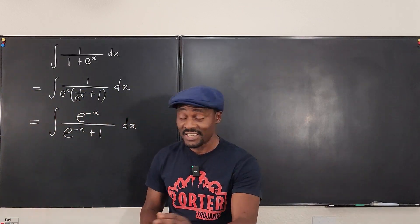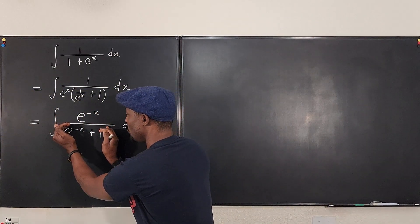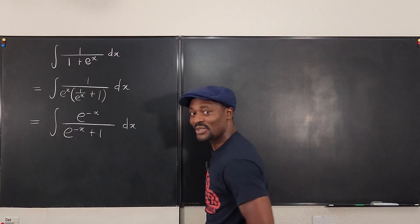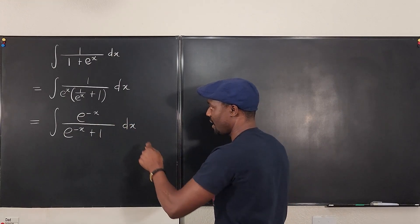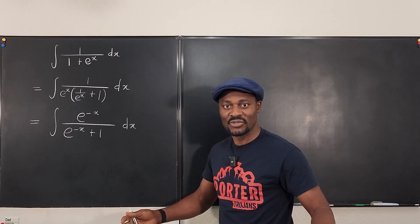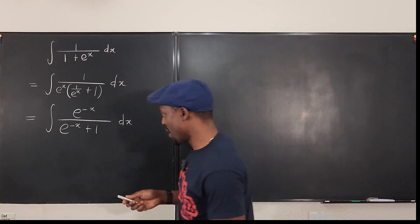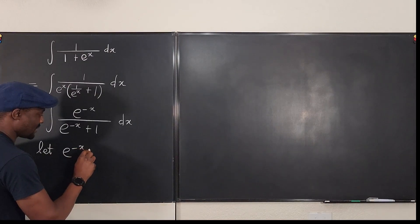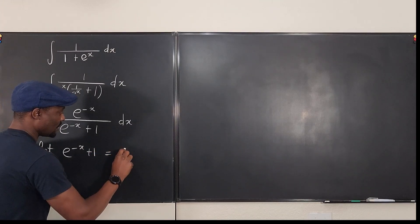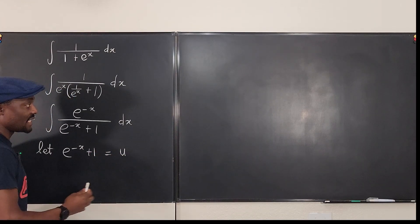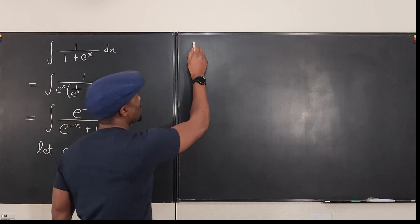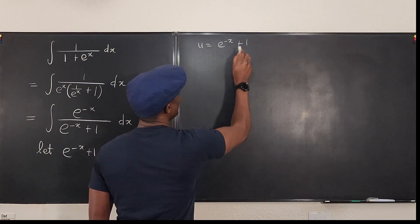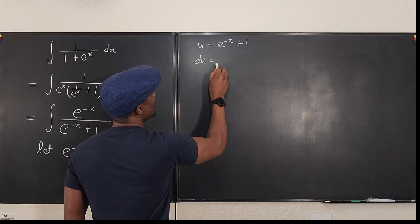Because now I am guaranteed that if I make this my u, when I take the derivative of this, e to the minus x will still appear and I can have it and do my integration. So what I'm going to say here is let e to the minus x plus 1 be equal to u. And I can take the derivative of both sides.